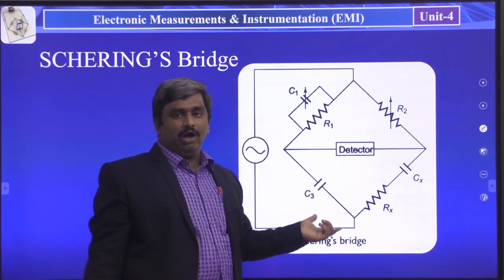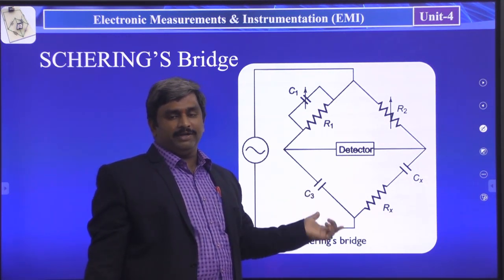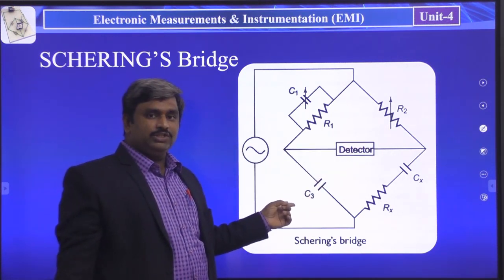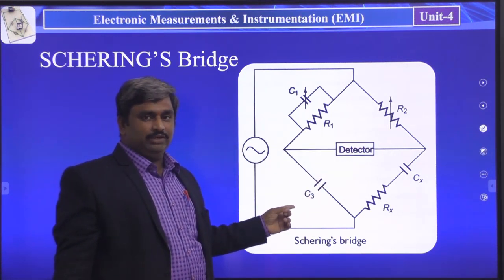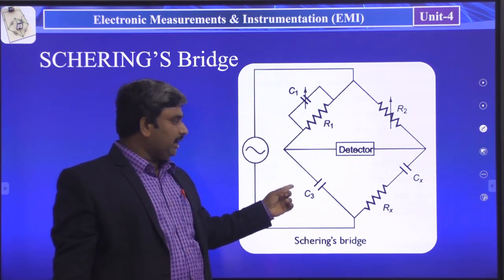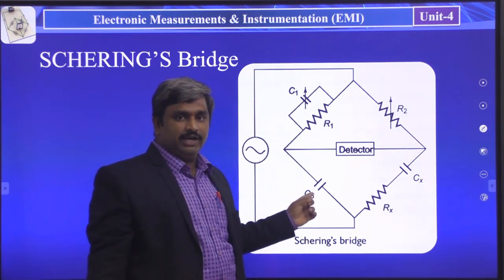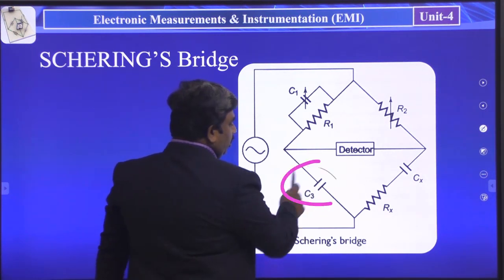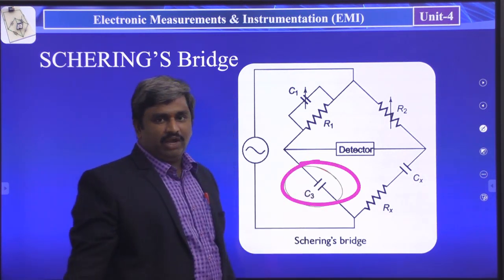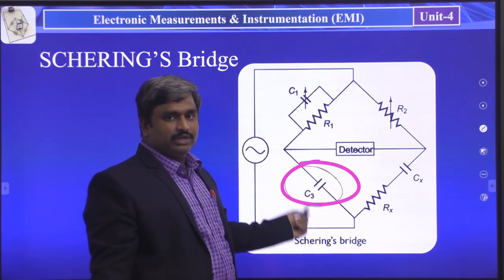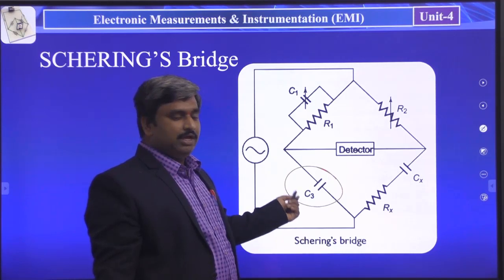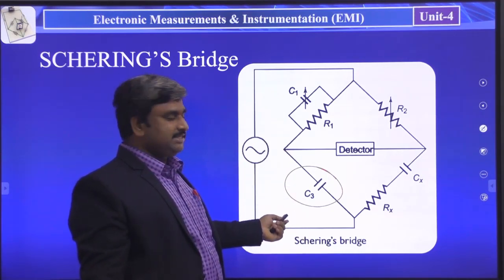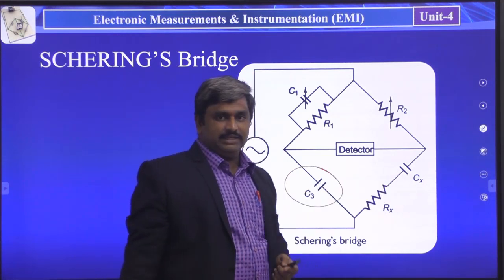We have to write down each arm's impedance value. Z2 is equal to R2 and Z3 is equal to C3. We have to write down the capacitance term. In the third arm Z3, we have changed from resistance to capacitance. Here we have a known capacitor C3, and C1 — two capacitances are available — and CX, which we have to find.